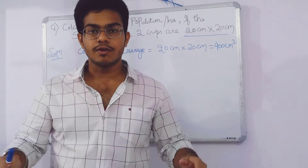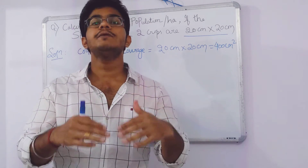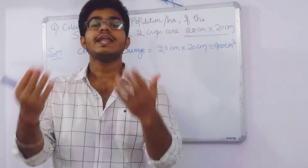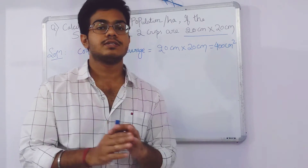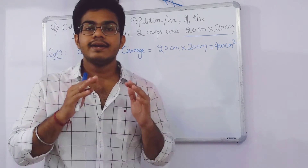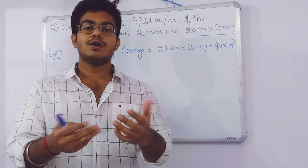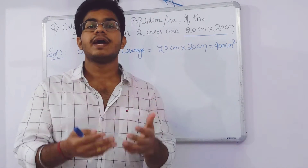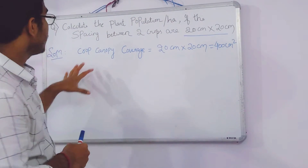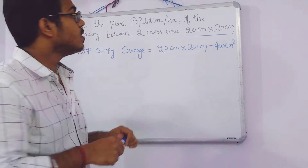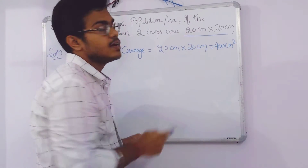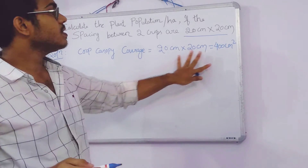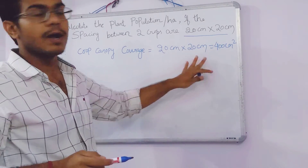In a meter square of land, how many plants are present — so that we can then calculate it for one hectare of land, which will be easy for us. Now let's solve it. For the crop canopy coverage, we multiply the spacing: 20 by 20, and we get 400 centimeters square. This is the crop canopy coverage formula.